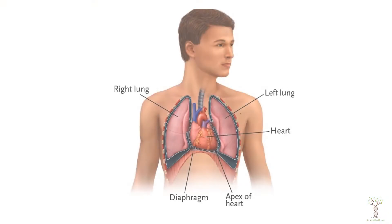The heart is located in our thoracic cavity above the diaphragm and in between the two lungs. This center area of the thoracic region is called the mediastinum, and the heart and the lungs are surrounded by connective tissue called pleura that allows them to move and expand and contract without having friction.